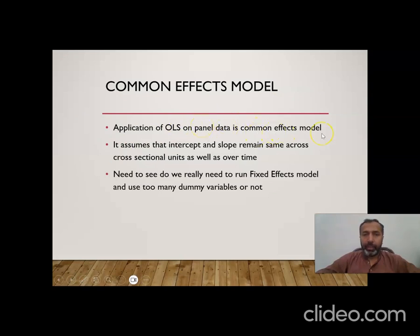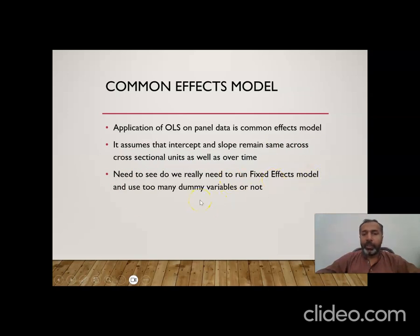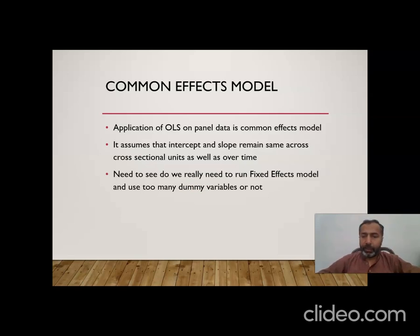The common effect model is called 'common' because it assumes that the intercept as well as slopes are common across all cross-sectional units and across all years. It assumes that intercept and slope remain the same across cross-sectional units as well as over time. It is important to run the common effect model first and then compare it with the fixed effect model to see whether we really need to introduce dummy variables.